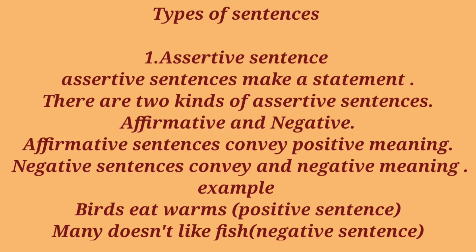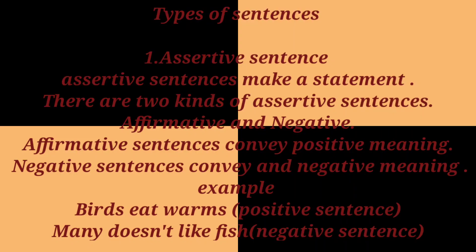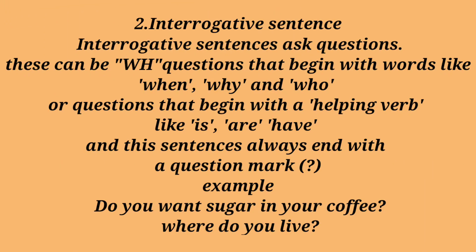For example, 'Birds eat worms' — this is an affirmative sentence. The second example, 'Many doesn't like fish' — this is a negative sentence because here we can find the negation. So let's move to the next type.